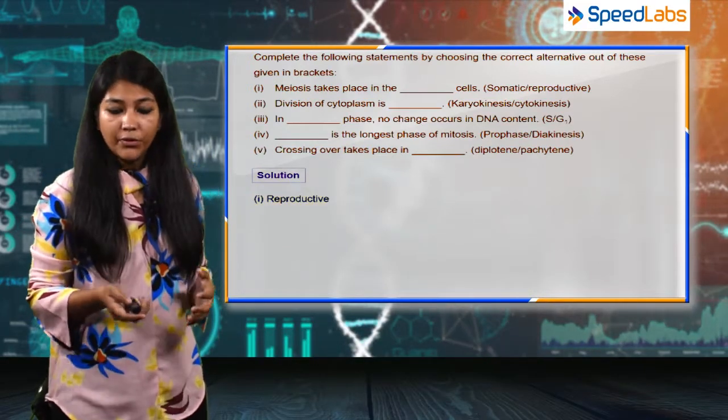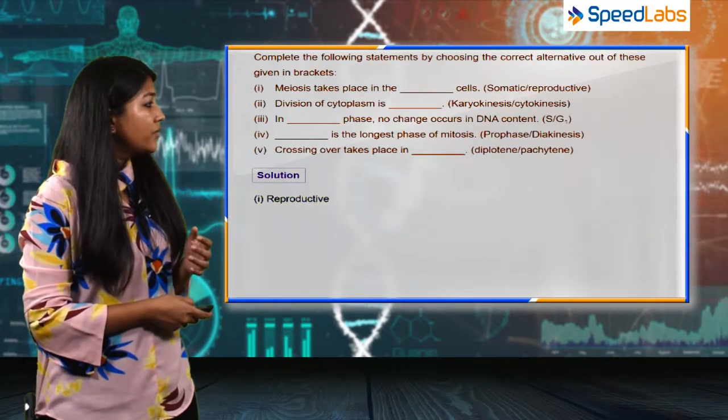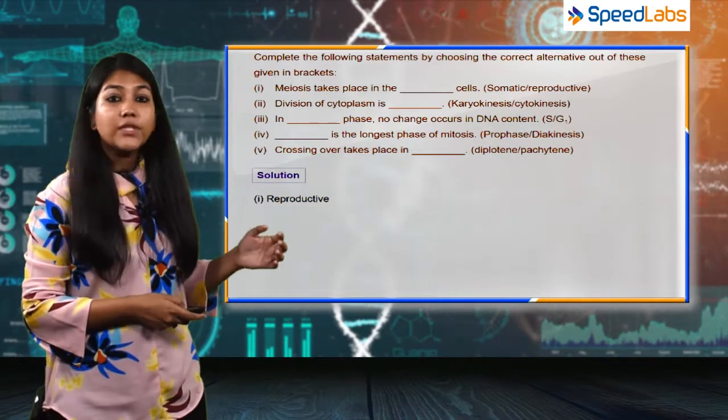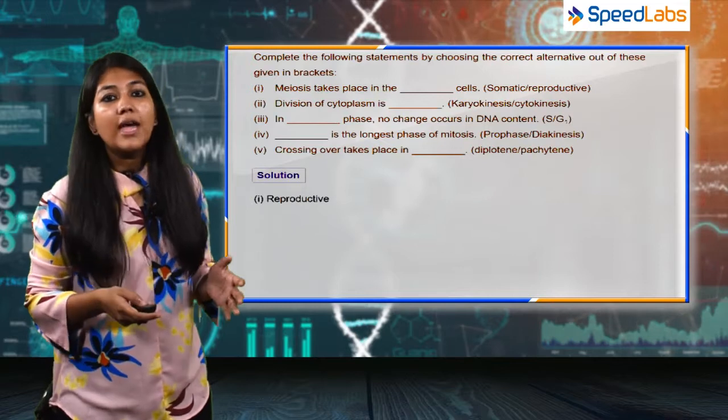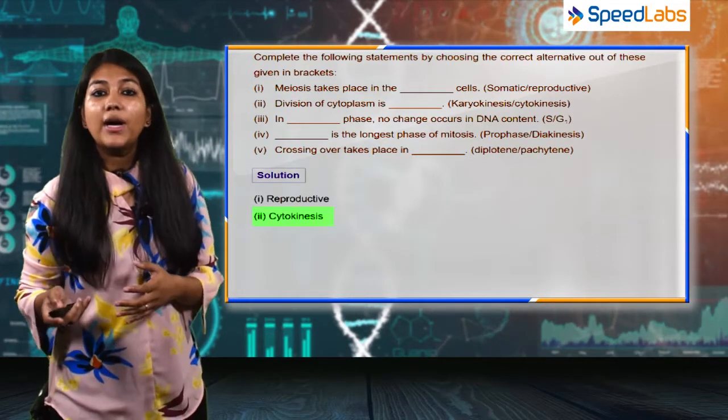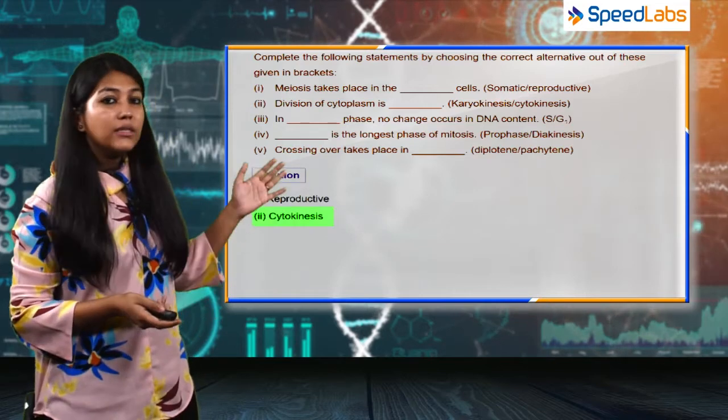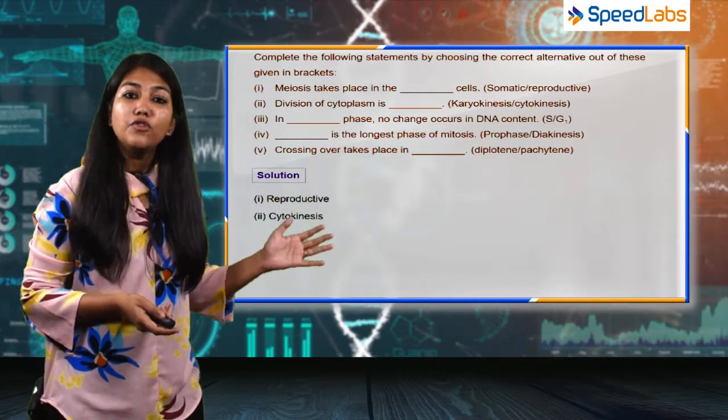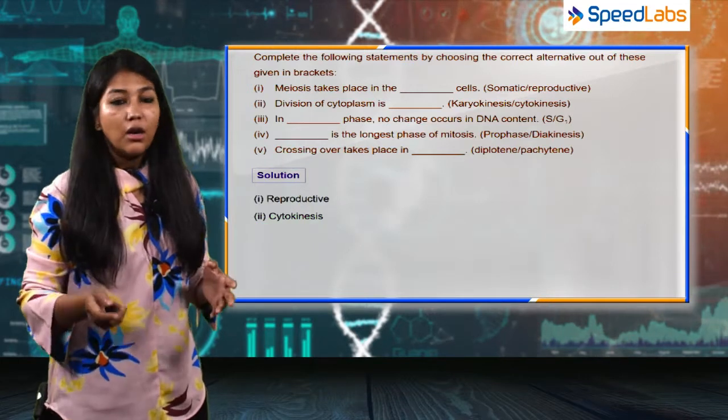Moving on to the next part of this question: division of cytoplasm is blank. Again, a very straightforward question. The answer to this is cytokinesis. Karyokinesis is another option. Karyokinesis is division of the nucleus.